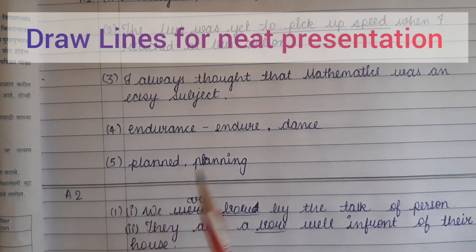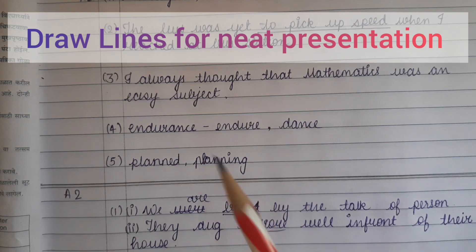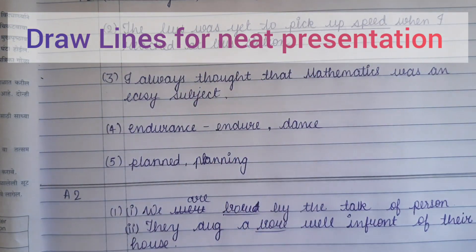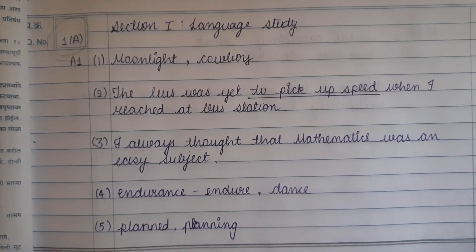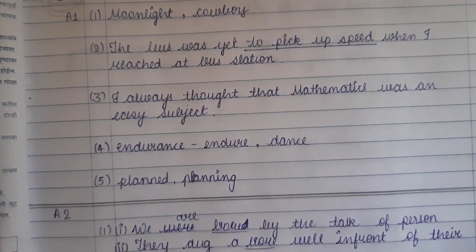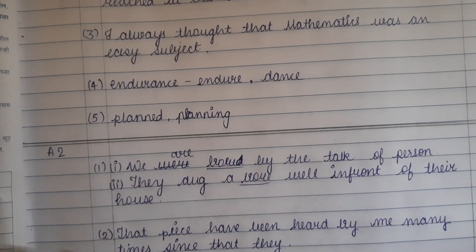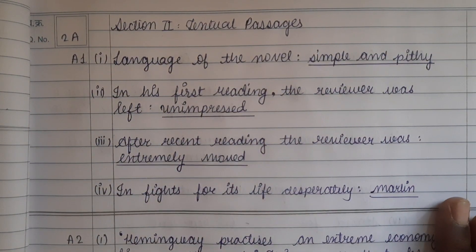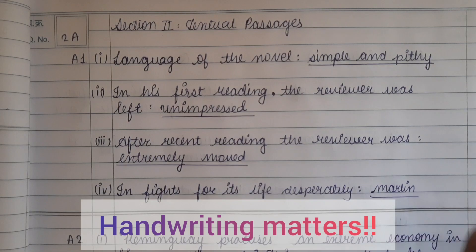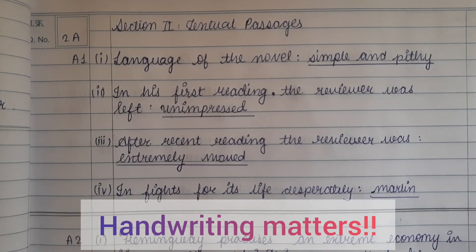Do not forget to draw lines between questions. Question 1A and question 2A are separated this way, which is why your paper looks very clean and good, and the examiner can clearly differentiate where question 1A has ended and where question 2A starts. And the very important thing is, make sure your writing is very neat and very legible. If your writing is very good, then the examiner will appreciate it — language is all about your presentation, language is all about your handwriting.